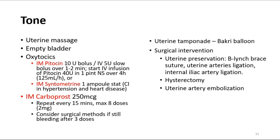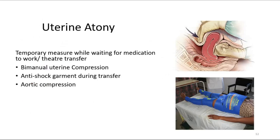Treatment depends on the cause. If due to tone — for example, uterine atony — perform uterine massage, empty the bladder, and give oxytocics such as IM Syntocinon and IM Syntometrine. If still bleeding, give IM carboprost. If bleeding continues after carboprost, consider other methods such as intrauterine balloon tamponade, Bakri balloon, or surgical intervention. Temporary measures while awaiting medication or OT transfer include bimanual uterine compression, anti-shock garment, and aortic compression.